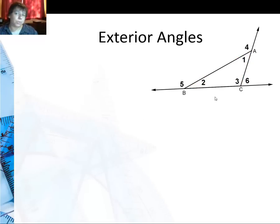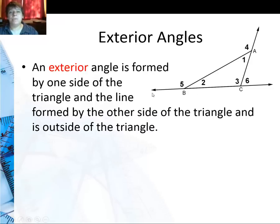Exterior angles we haven't really talked about, but as you know from our previous lessons, exterior means outside. So it's formed by one side of the triangle and the line that's extended.